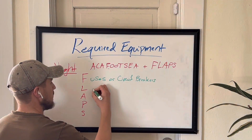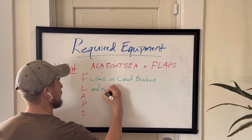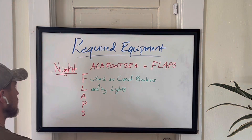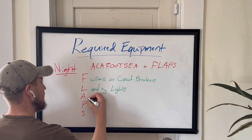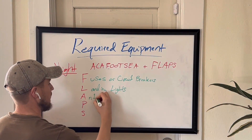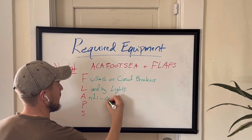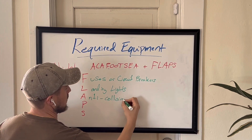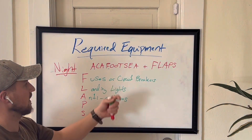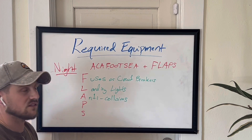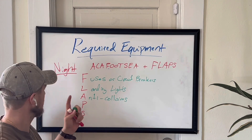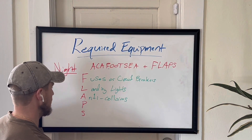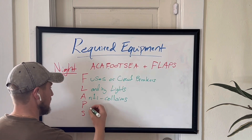L is going to be your landing lights. A is going to be anti-collision lights — I know we mentioned that in ACA FOOTSIE, but if we didn't have a vowel we wouldn't be able to make FLAPS, so we threw it in. And then P is going to be position lights.